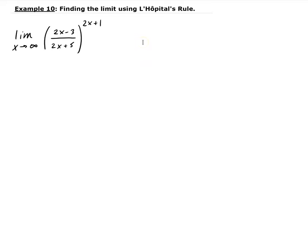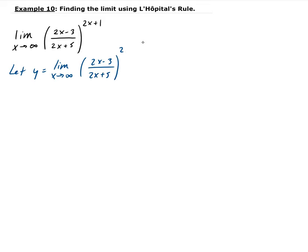In this example, we want to find the limit using L'Hôpital's rule. In order to find the limit of this expression, we need to use natural log to bring down the 2x plus 1. So we can assign this limit some variable — let y be equal to the limit as x approaches infinity of (2x minus 3) divided by (2x plus 5), all raised to the 2x plus 1.